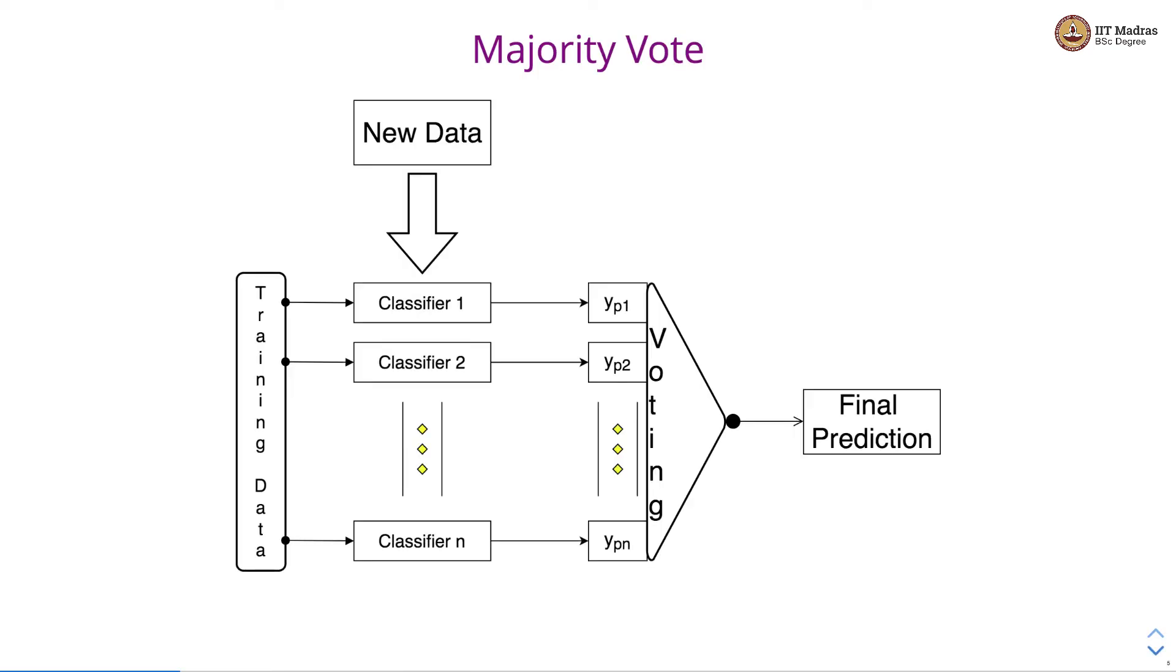Let's study majority vote. This is how majority vote works. We have training data and then we train n different classifiers. Whenever we get new data, we make predictions with all n different classifiers.